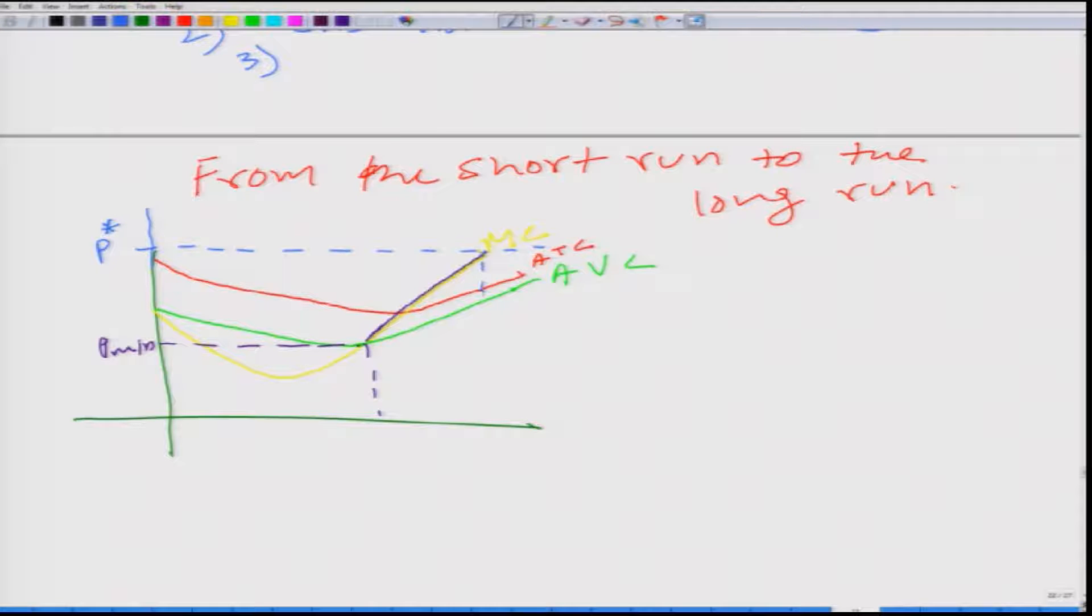What happens that at this market price, this firm would produce Q star amount of output. Now, what is happening if you pay attention that the total cost to produce Q star amount of output is given by let us say A origin B C, the rectangle AOBC gives the total cost.